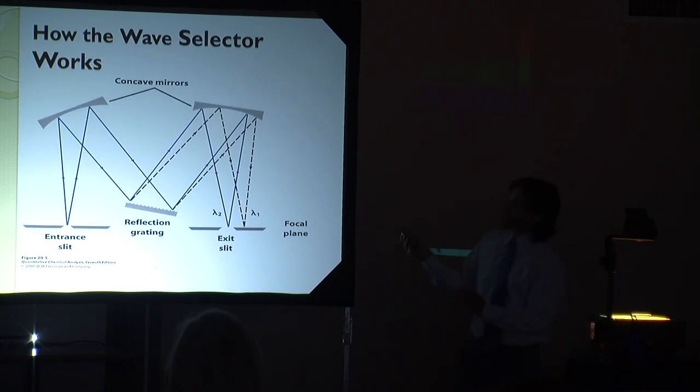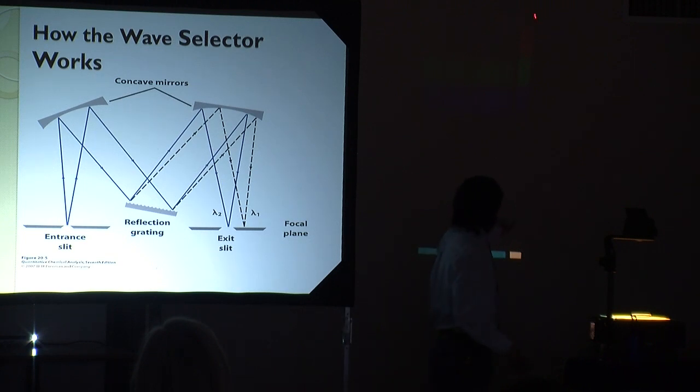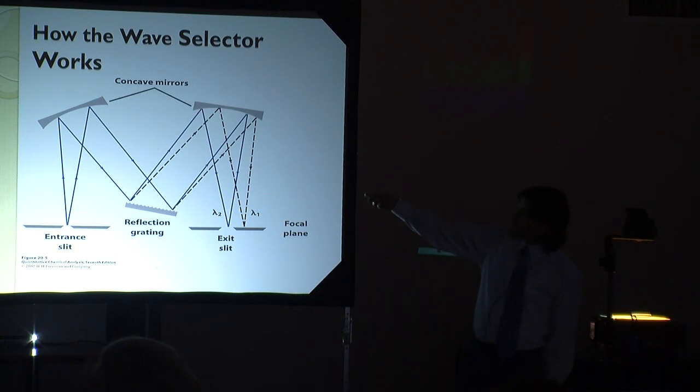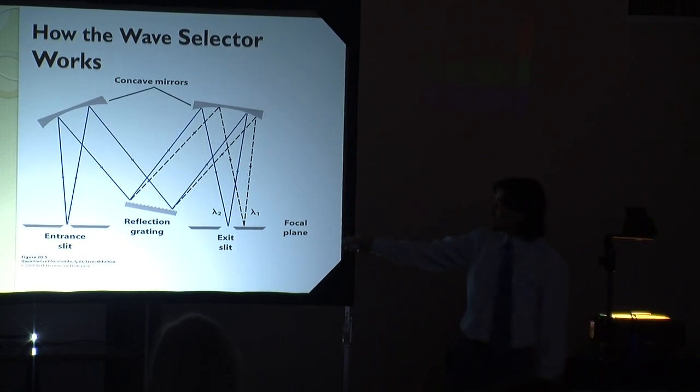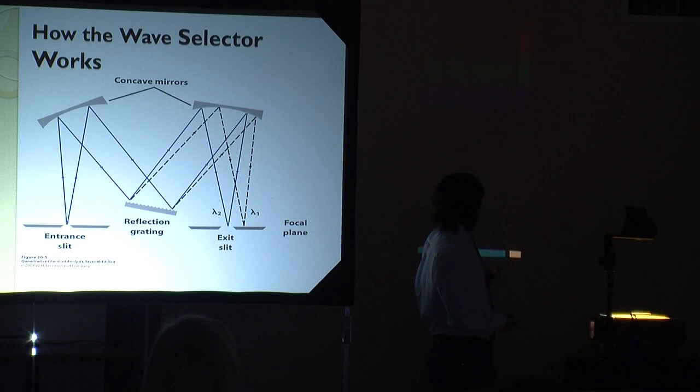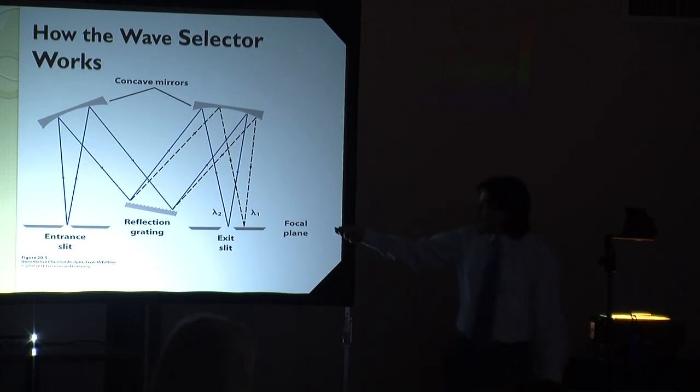This is how our instruments work. The wave selector has a light source here, which is white light. It enters in through the slit and bounces off of a mirror. That mirror reflects the light onto a grating here, and that grating spreads the light out into a rainbow, essentially like this. The rainbow has various points of impact for each wavelength. By moving this grating back and forth, we can select an individual wavelength - say blue, green, red, any color that we want - and that is the only color that will come out of this slit. All the other colors are absorbed by the walls of the instrument.